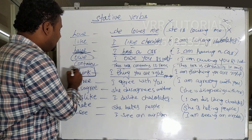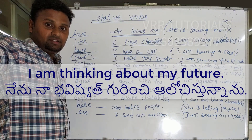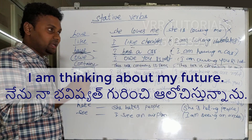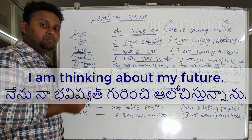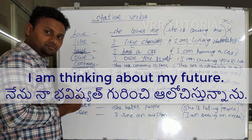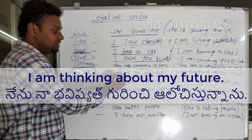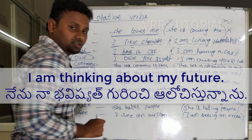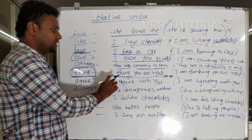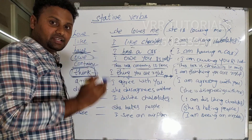When 'think' functions as a dynamic verb — expressing an action — we say: I am thinking about my future. That is correct. Here 'think' is an action. So: when it is opinion, don't use continuous; when it is action, you can. I think you are right — that's it.